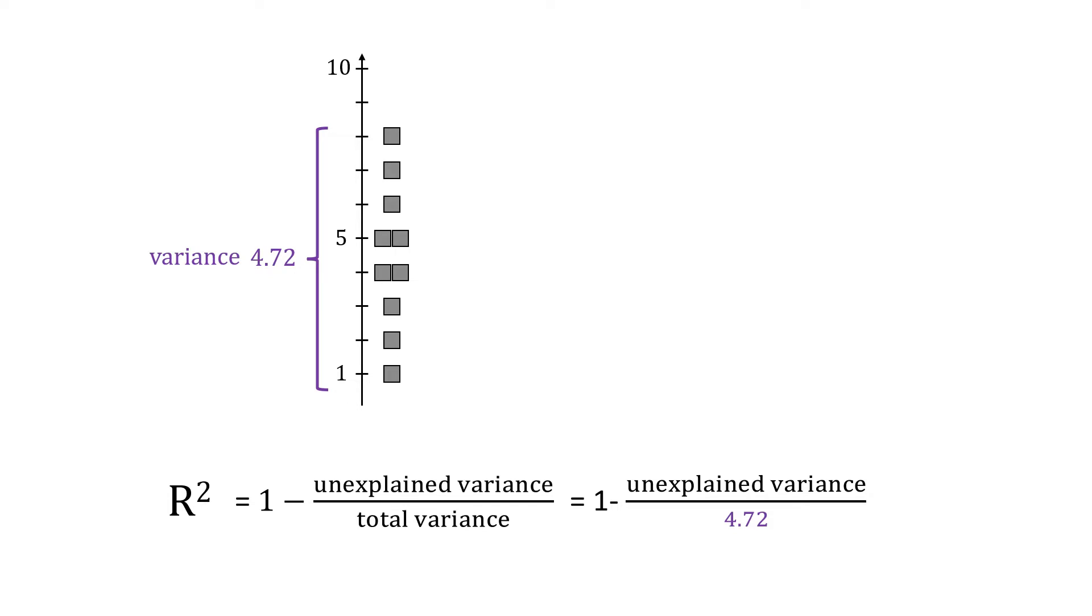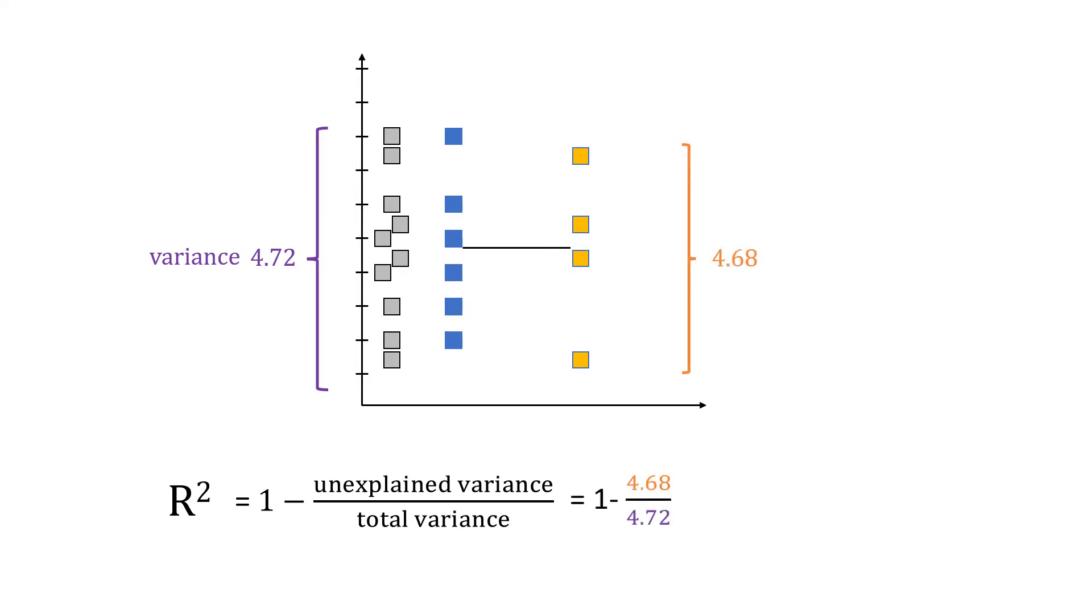Of course, the value of r squared and the effect this rotation has depends on the grouping variable. Let's use a different one. Now you might see that the blue and yellow points are not as well separated compared to the first grouping. When we do the same as before and rotate the line, we will see that the gray points will not be as close together compared to the first grouping. Consequently, the unexplained variance is higher, so the r squared is lower. There is not much variance in the outcome explained by this grouping.